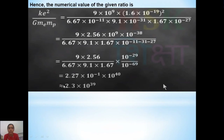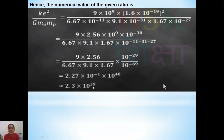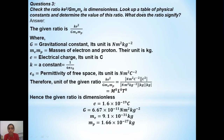The numerical value comes out to approximately 2.27, and 10 to the power of 40 minus 1 gives 10 to the power of 39. Rounding 2.27 to significant figures gives approximately 2.3. So the numerical value of this ratio is 2.3 into 10 to the power of 39. This answers the second part of the question.